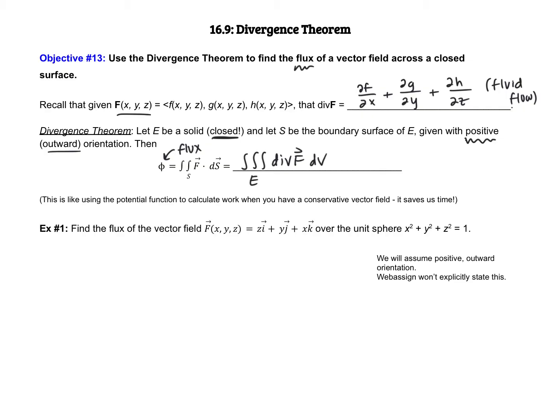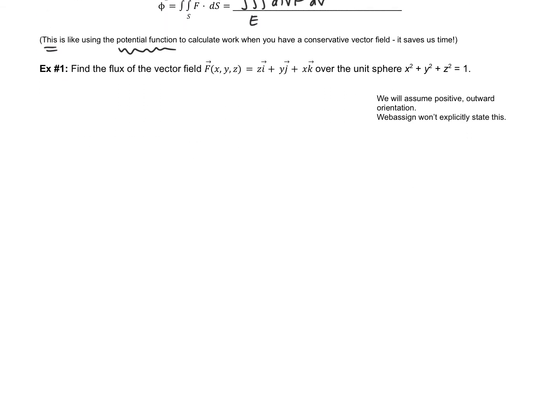So, as you can see in my little note here, it's kind of like using the potential function to calculate work. And remember, that's only if you have a conservative vector field. It's going to save us some time. Now, you might be wondering, well, why is that? What does the proof look like? And I'm sorry to disappoint you, we are not going to do the proof together. There is a proof, though, in your book. So, let's just jump right in and do example number one.